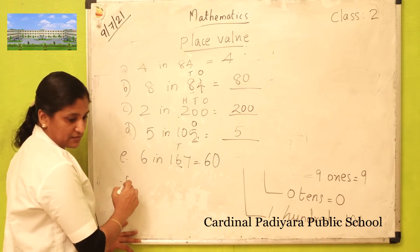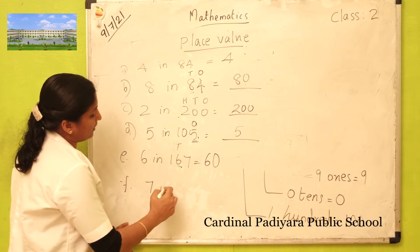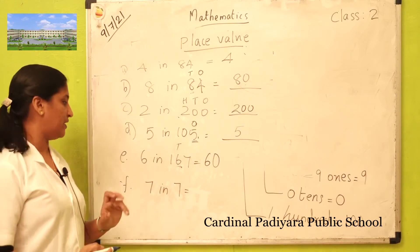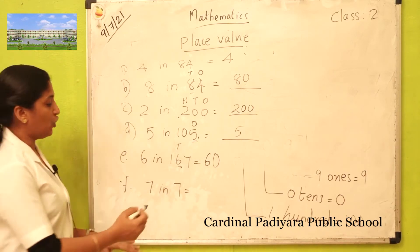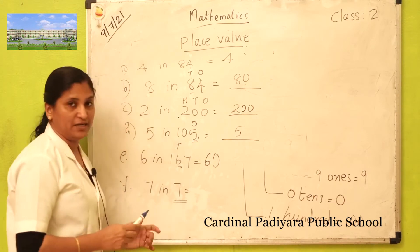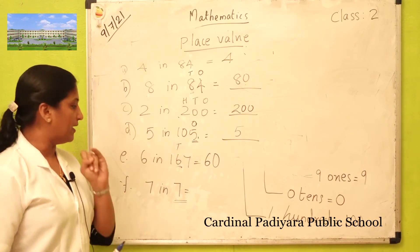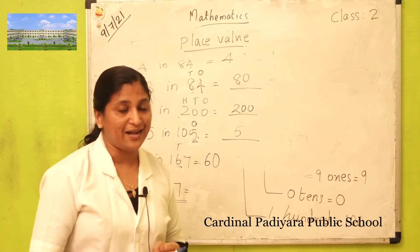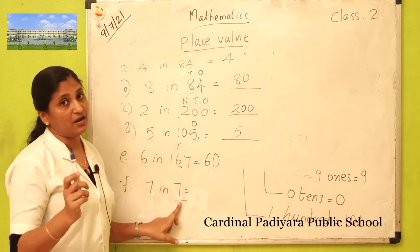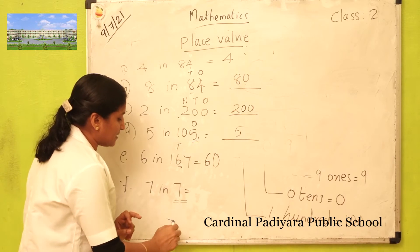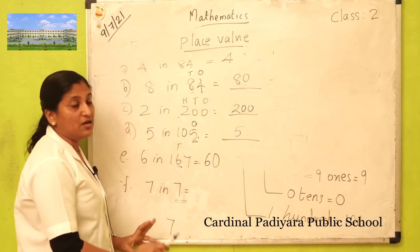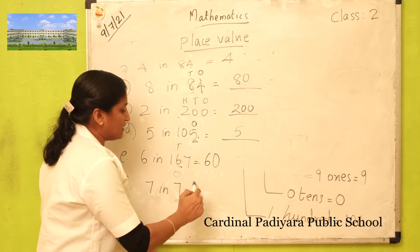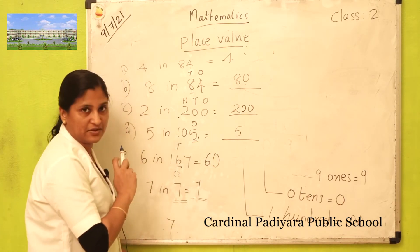The last one: seven in 7. What is the place value of seven in the number 7? Only one digit — when a number stands alone, that number is in ones place. How many ones? Seven ones. Seven ones is seven.